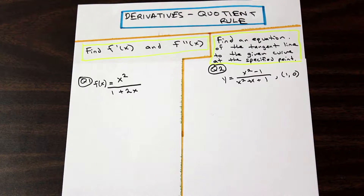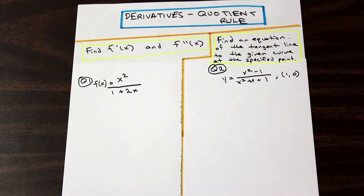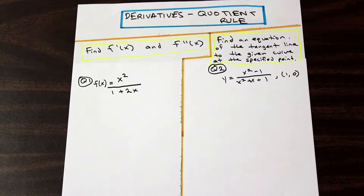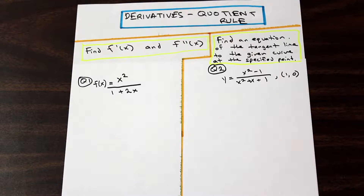Let's get started. The first question is asking us to find f prime of x and f double prime of x — the first derivative and the second derivative. We are given f of x is equal to x squared over 1 plus 2x. If you've done the last video, this should be fairly straightforward. If not, pause the video and see if each step matches up with ours.